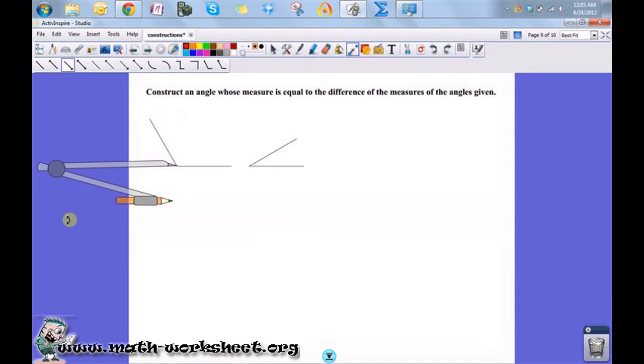I want to construct an angle whose measure is equal to the difference between these two angles. So I'm going to start by just drawing a line.